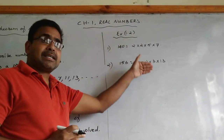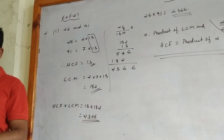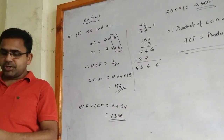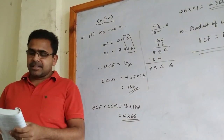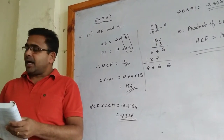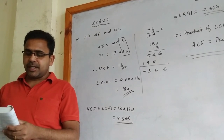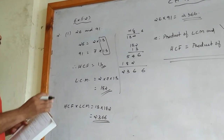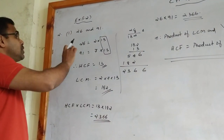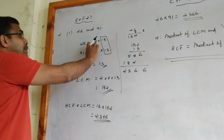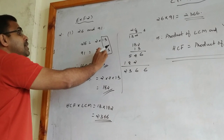This way we can factorize the remaining numbers in that exercise — you can do those as homework. Now in exercise 1.2, question number 2: find the LCM and HCF of the following pairs of integers and verify that LCM × HCF = product of the two numbers. First pair: 26 and 91. We first prime factorize both numbers: 26 = 2 × 13, and 91 = 7 × 13.